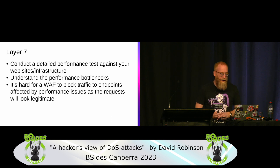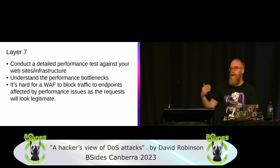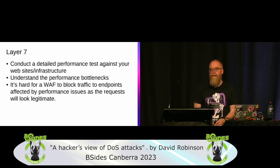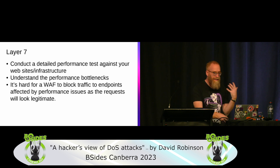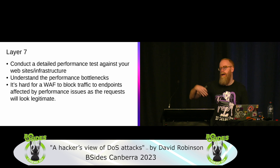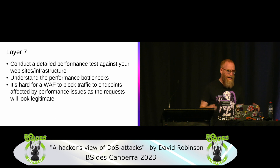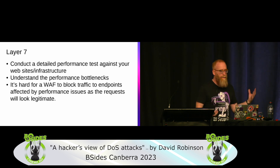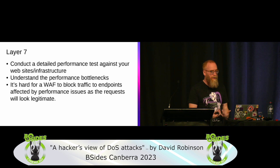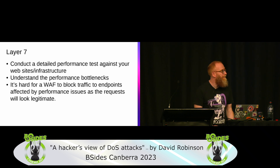For layer 7 protection, you need to conduct detailed performance tests against all your websites and infrastructure — not just your websites, but also VPNs and Outlook Web Access. You need to understand your performance bottlenecks because WAFs and DoS scrubbing find it hard to block layer 7 attacks since they look like legitimate requests and normal usage of your systems.